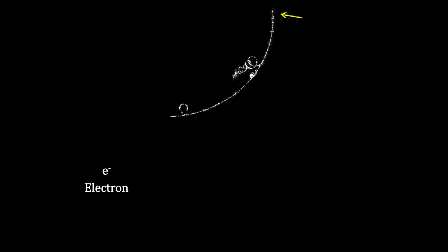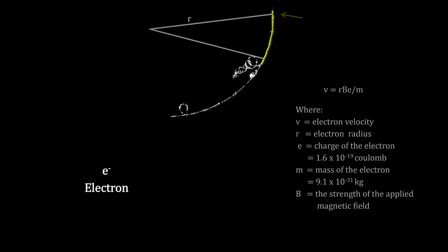This is a medium speed electron arching through the cloud chamber. Since we know the strength of the magnetic field applied across the bubble chamber, we can calculate the particle's momentum by measuring the radius of its curvature.